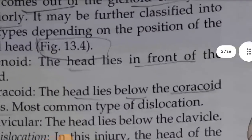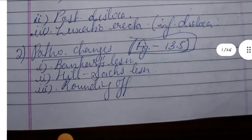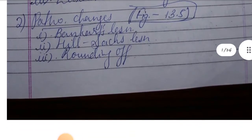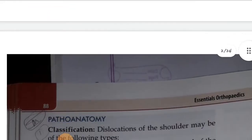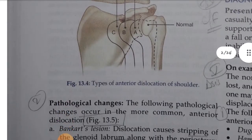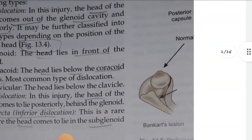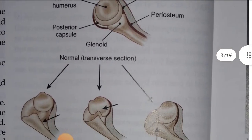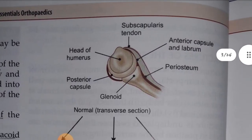Pathological changes include: first, Bankart lesion; second, Hills-Sachs lesion; and third, rounding off of the glenoid rim. This is shown in a diagram depicting the head of humerus, posterior capsule, anterior capsule, labrum, periosteum, and glenoid.